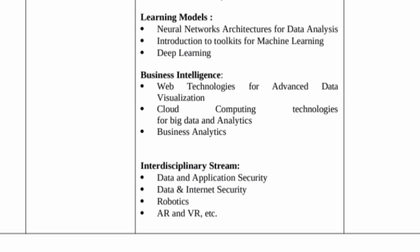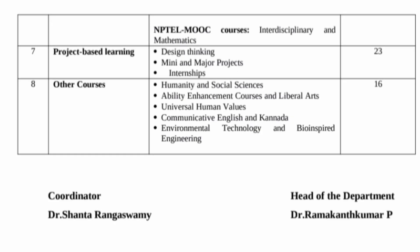Next is project-based learning, also worth 23 credits, covering design thinking and mini and major projects. Finally, there are other compulsory courses not related to computer science — mandated by VTU or AICTE — including humanities and social science, ability enhancement courses, liberal arts, universal human values, communicative English and Kannada, environmental technology, and bio-inspired engineering. These are compulsory, worth 16 credits, and spread across multiple semesters. That is how the full 160 credits are divided for CSC Data Science students, after which you receive your degree.